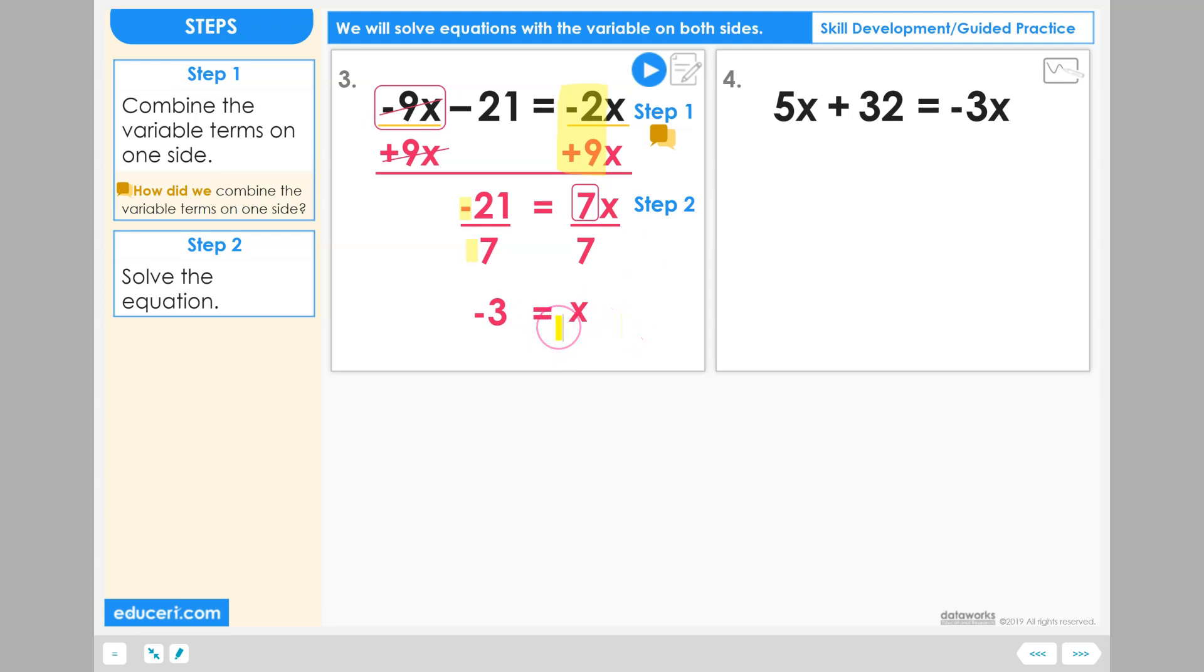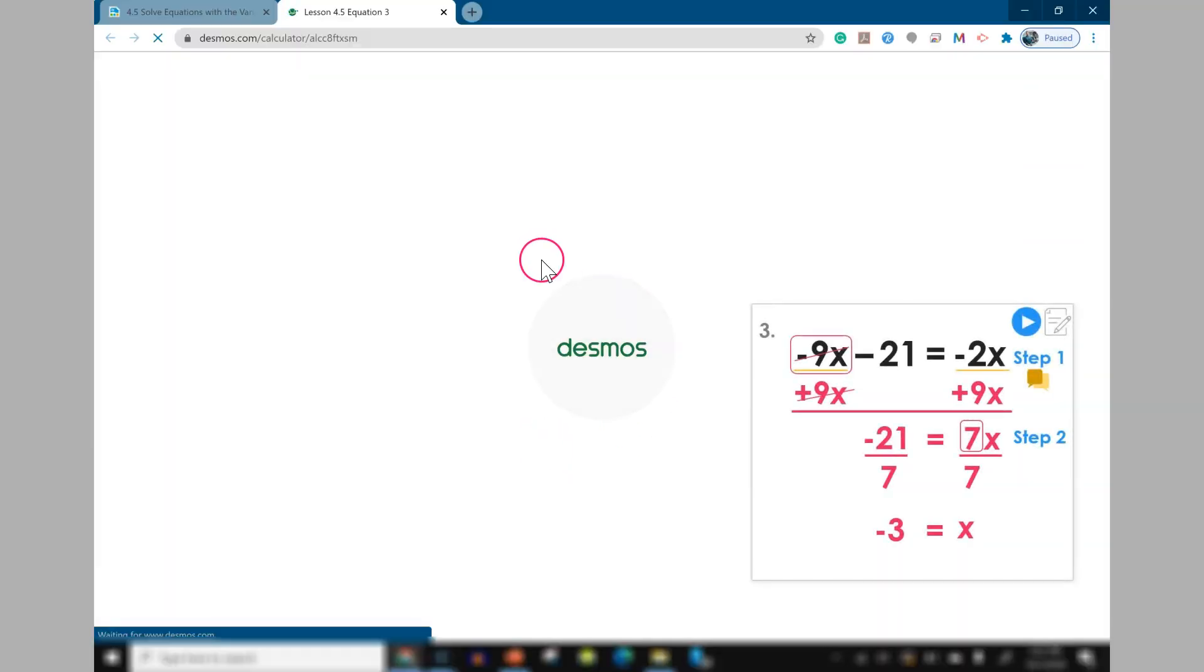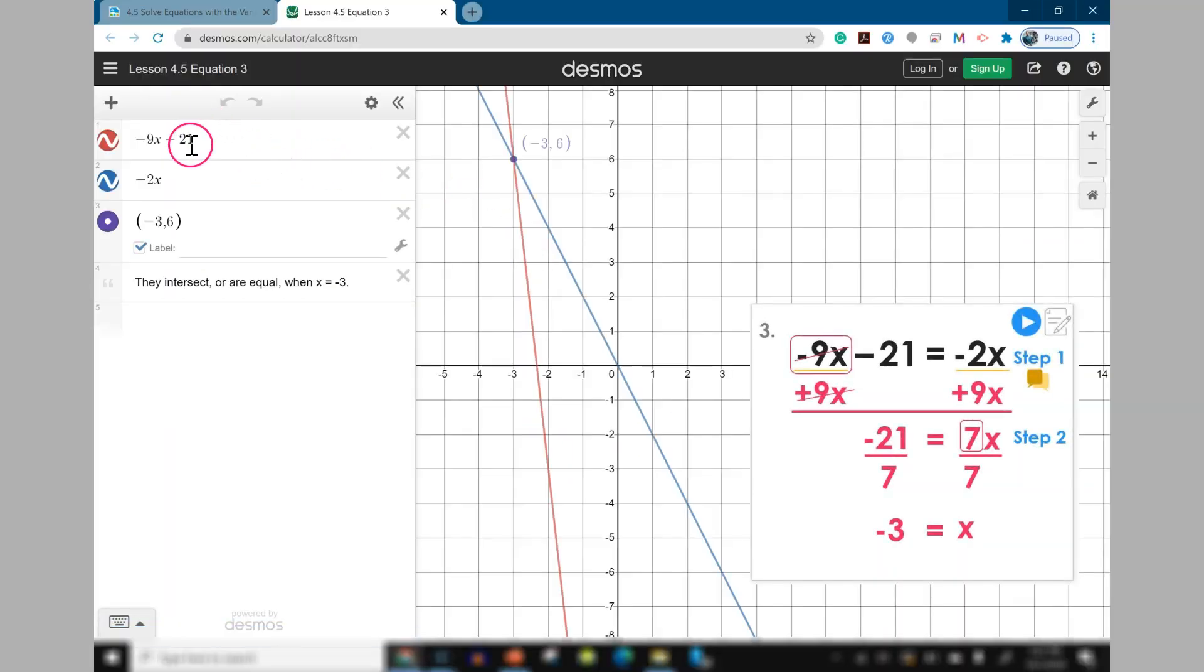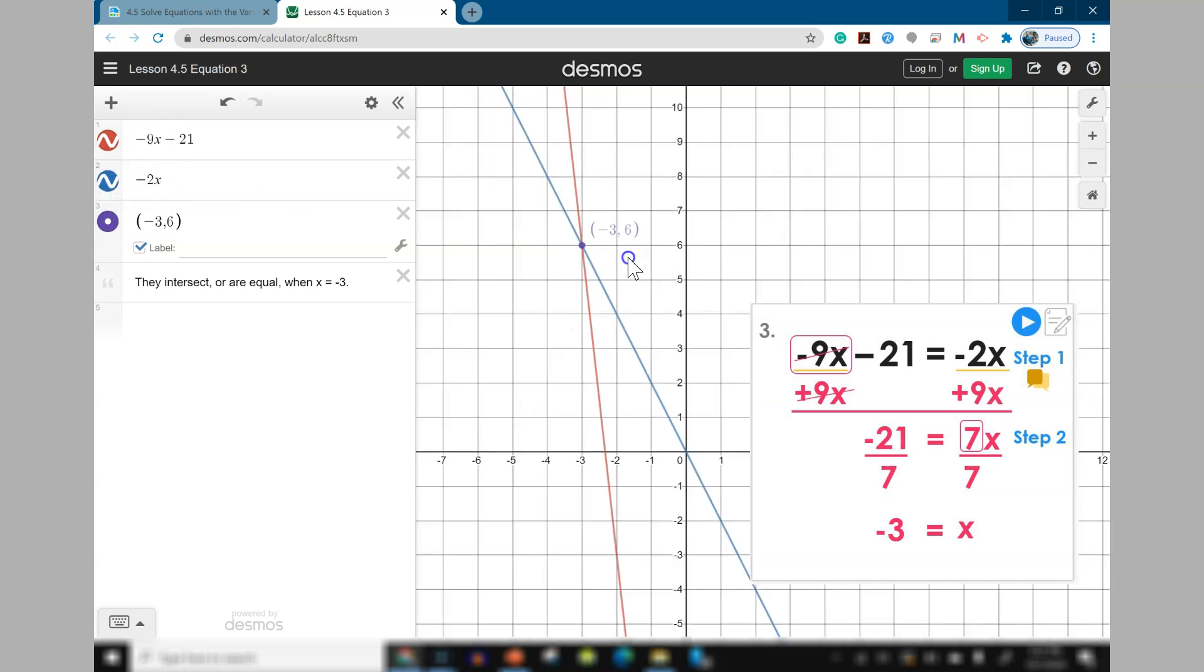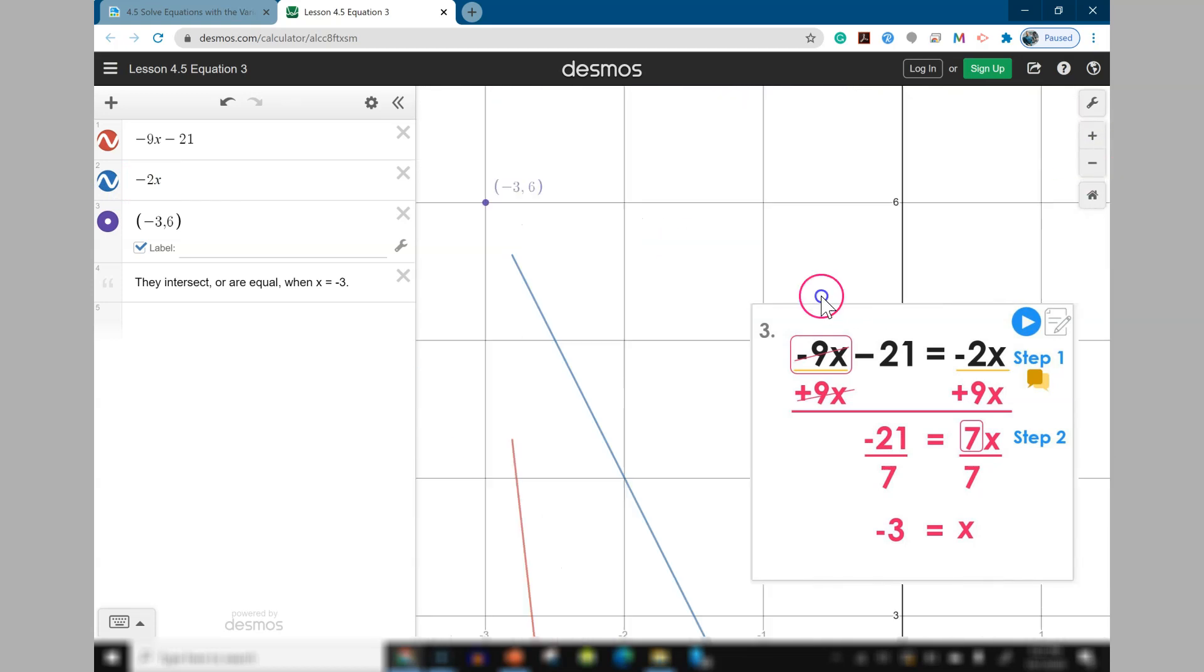To check our equation, let's use our Desmos trick one more time. So, here are the two graphs. In red is the left-hand side expression, negative 9x minus 21. In blue is the right-hand side expression, negative 2x.